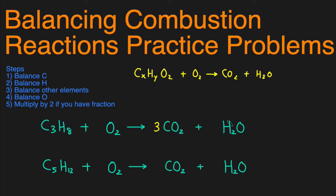There are eight hydrogens on the left and two on the right, so I need to put a four right here because four times two gives me eight — now the hydrogens are balanced on both sides. There aren't any other elements besides carbon and hydrogen other than oxygen, so I can jump into balancing the oxygens. In CO₂ I have a total of six oxygens because three times two is six. In H₂O I have a total of four oxygens because four times one is four. Adding them together I have ten oxygens on the right-hand side, so I need ten oxygens on the left. Ten divided by two gives us five, so I get 5 O₂ — and that is the balanced chemical reaction. You can also write a one in front of the hydrocarbon if you want to.